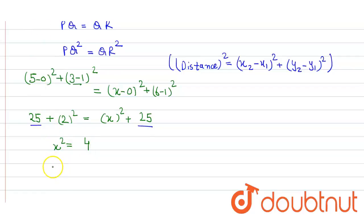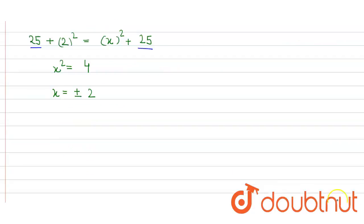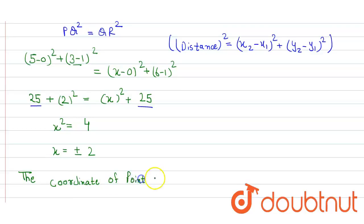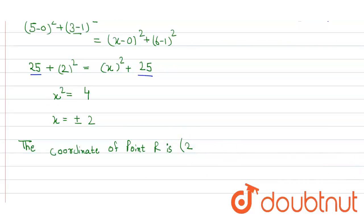So the value of x will be equal to ±2. There are two possible coordinates for point R: the first is (2, 6) and the other is (-2, 6).